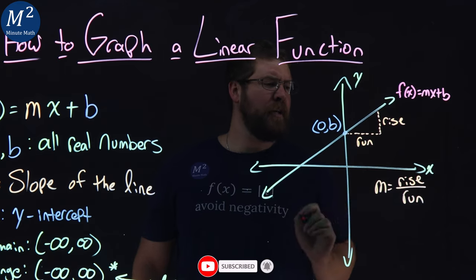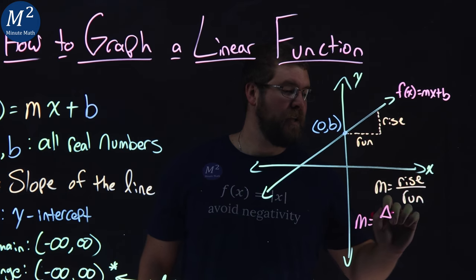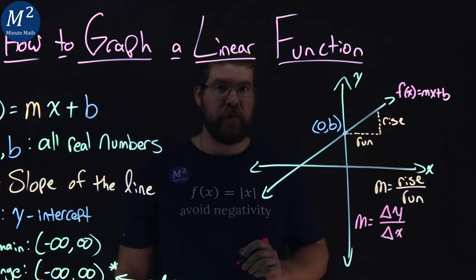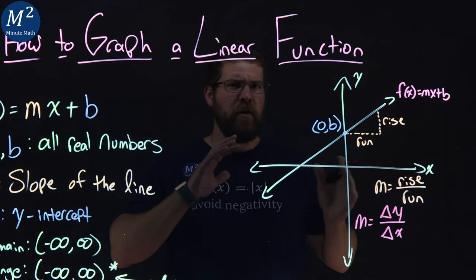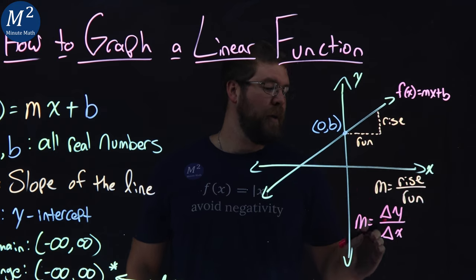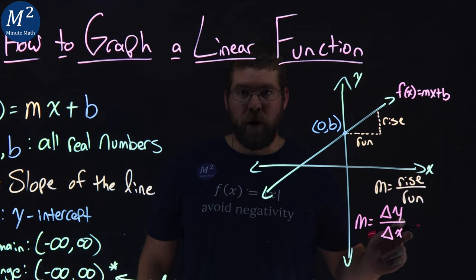It's our change in y. So sometimes we'll see it like this. M equals a change in a y value over the change in the x value. So sometimes we'll see what that looks like here, but delta y means change. So change in the y value and change in the x, the rise over the run.